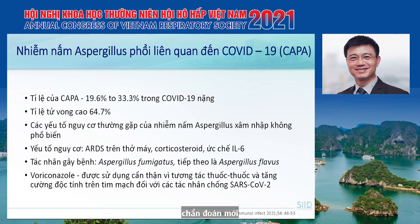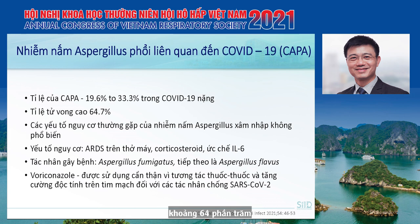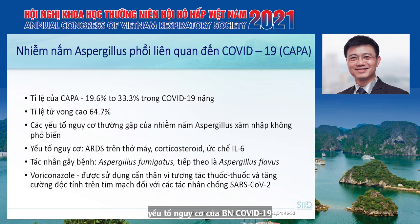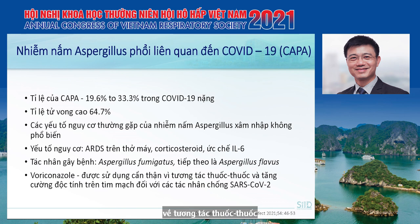COVID-19 associated pulmonary aspergillosis should be considered in newly diagnosed severe COVID-19 patients. The incidence of CAPA was about 19% to 33% in severe COVID-19, with a mortality rate of about 64%. Risk factors include ARDS on mechanical ventilation, receiving corticosteroid or interleukin-6 inhibitor. Voriconazole is still the drug of choice for treatment of CAPA, but caution is needed regarding drug-drug interactions with anti-SARS-CoV agents.